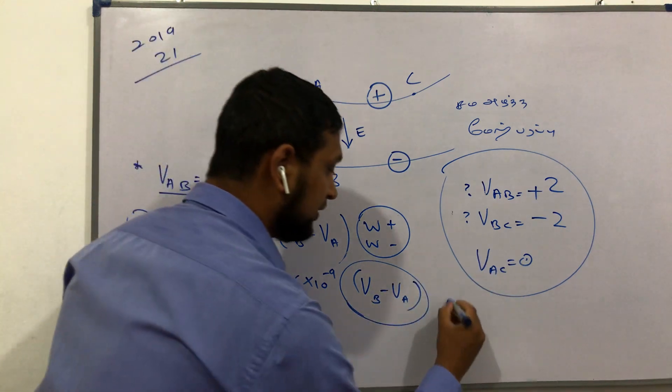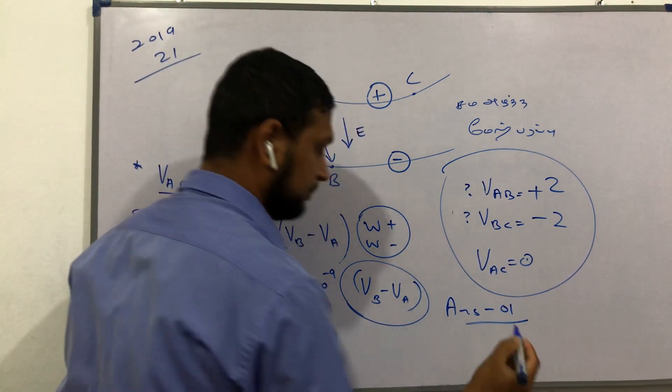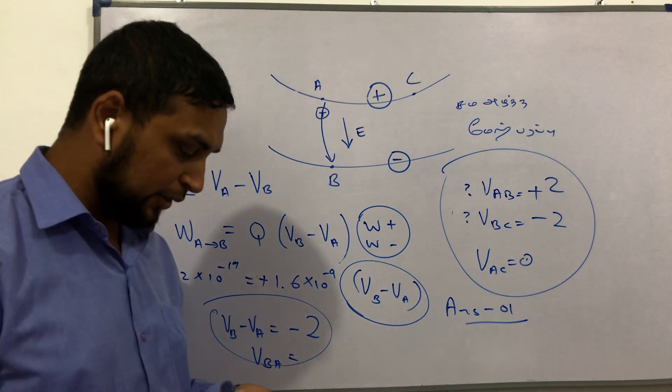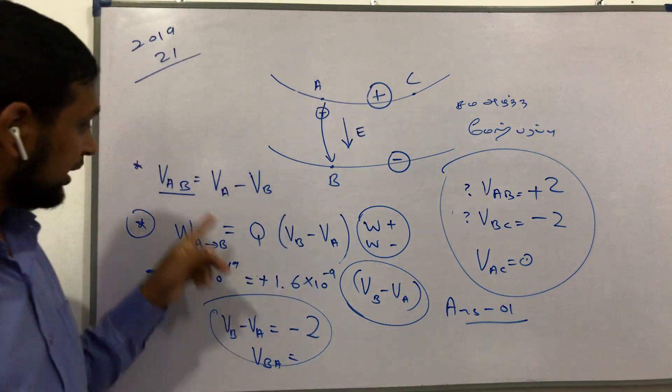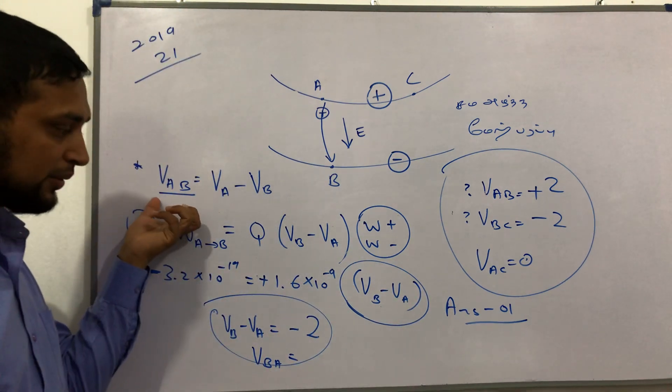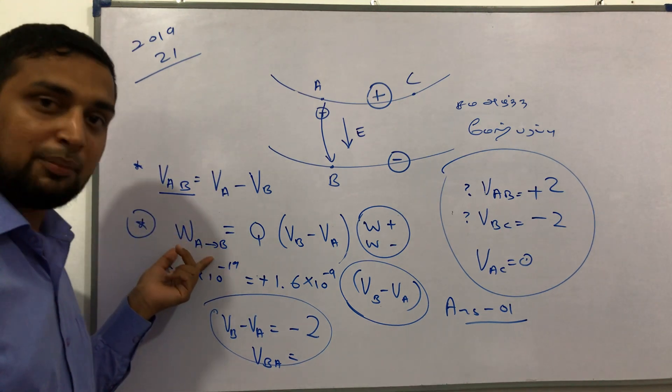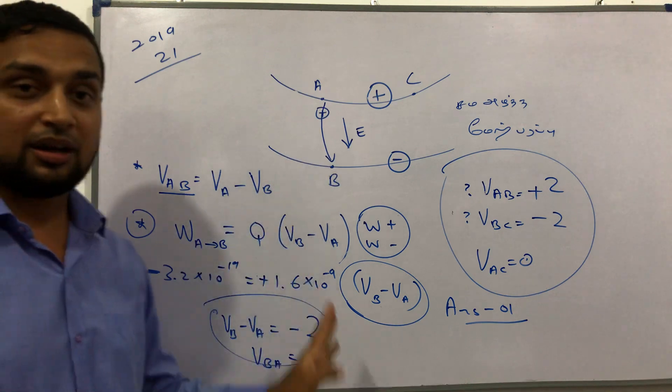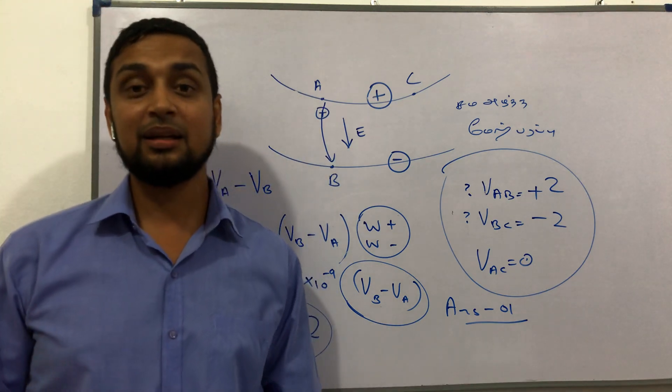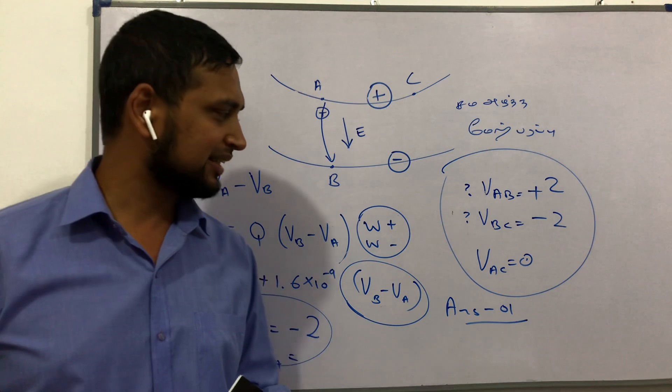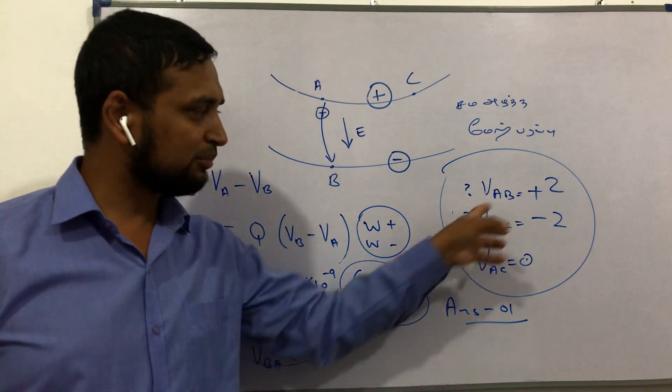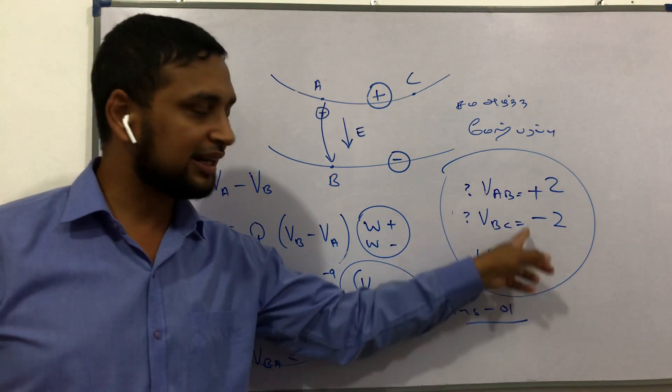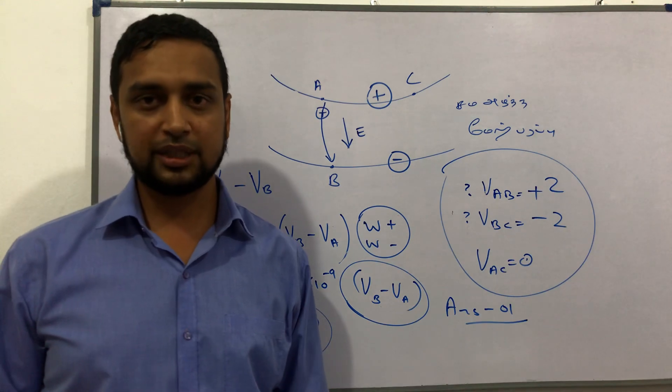Now let's go to the main point. VAB and VB follow the sign convention we discussed. If you have the same path, follow these rules. Thank you.